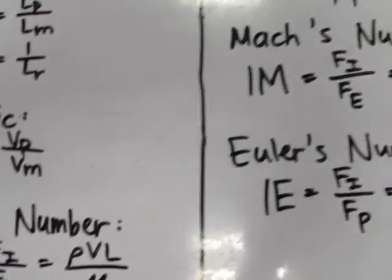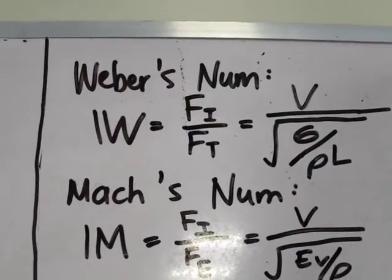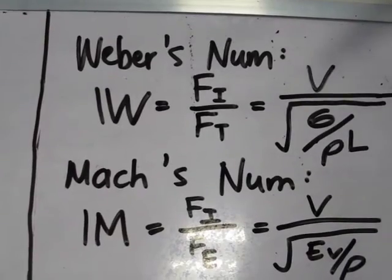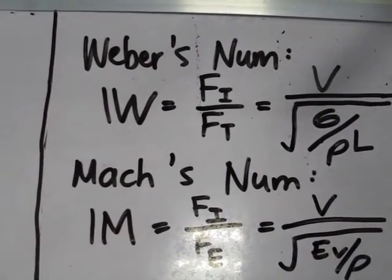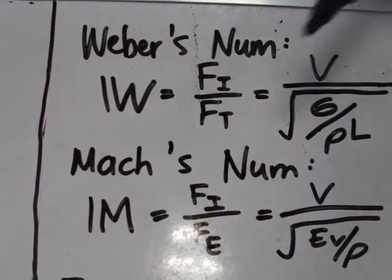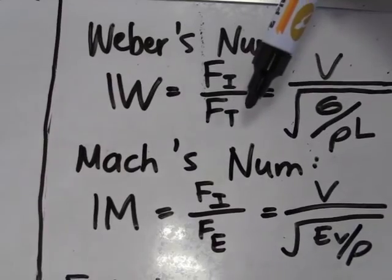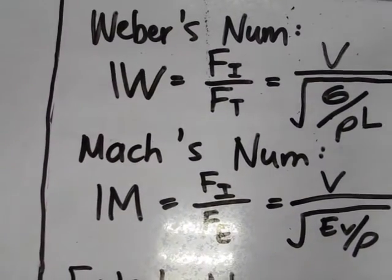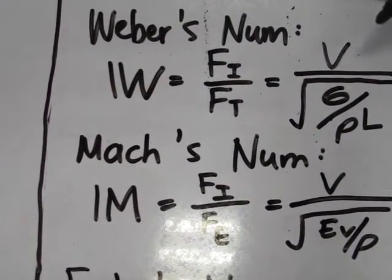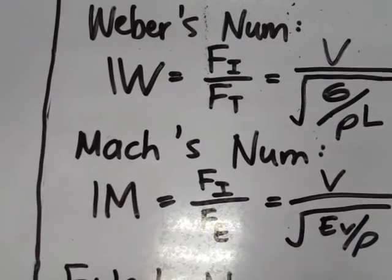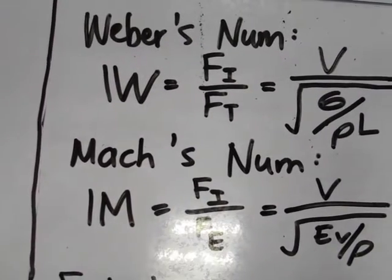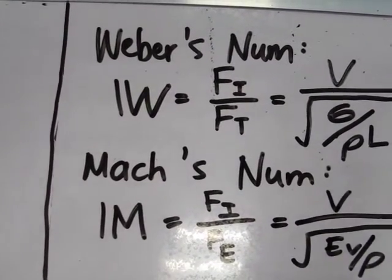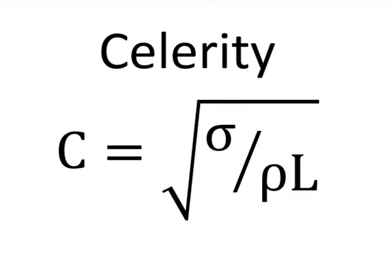Next is Weber's number. This dimensionless parameter is associated with surface tension effects, or the tension force. Weber's number is equal to its corresponding equation, and it is noted that the denominator is also called celerity, or c.